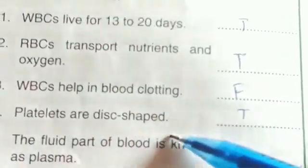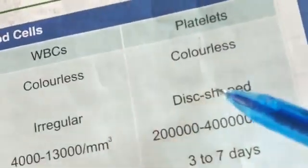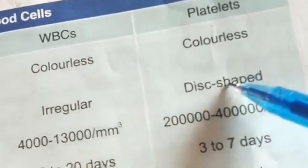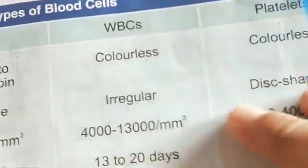Platelets are dish-shaped — that is true. You can find the shape of platelets on page number five; it is written that platelets are colorless and dish-shaped, so that will be true.